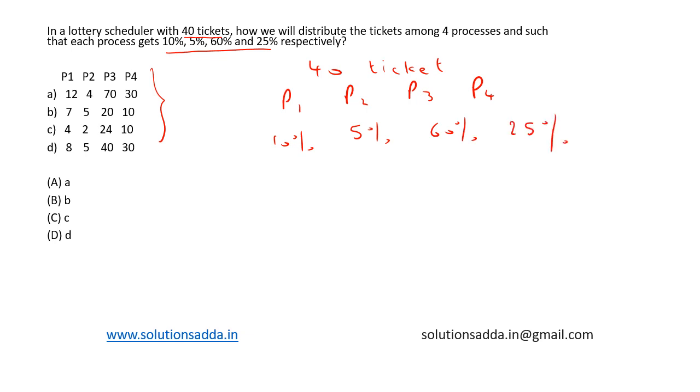So 10% means 0.1 times 40, which is equal to 4. P2 would be 0.05 times 40, which will be equal to 2. P3 would be 0.6 times 40, which will be equal to 24.